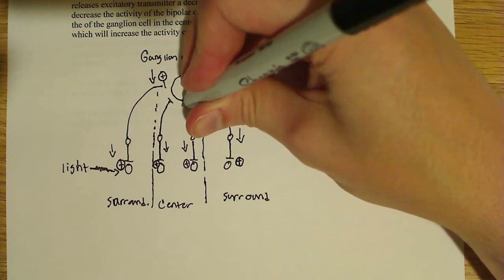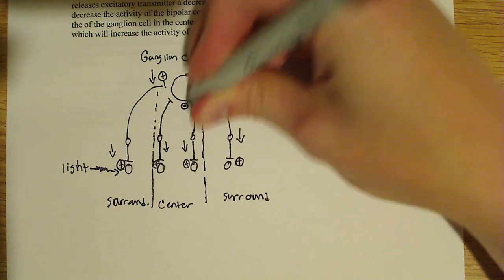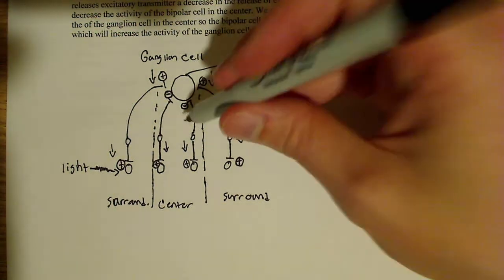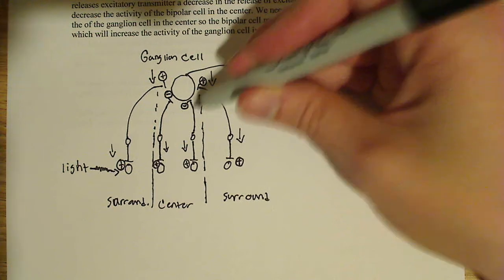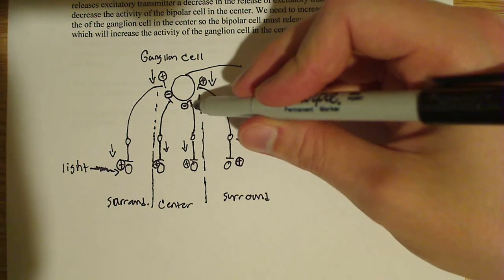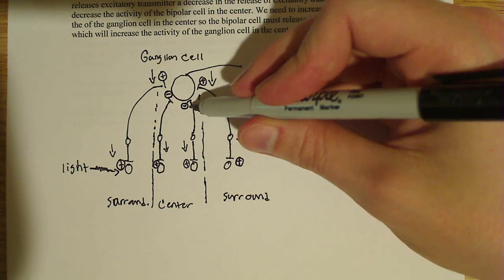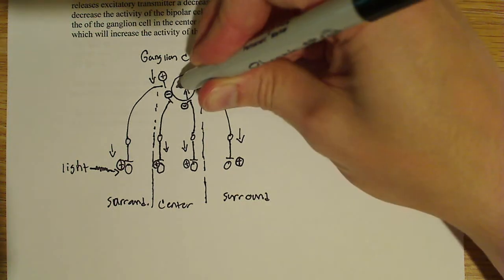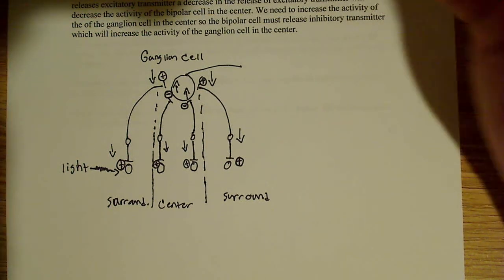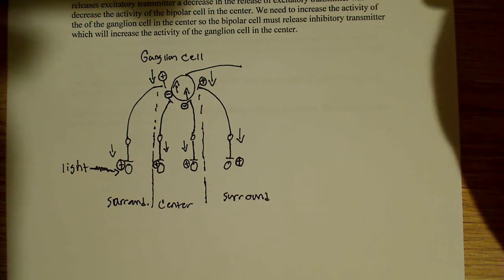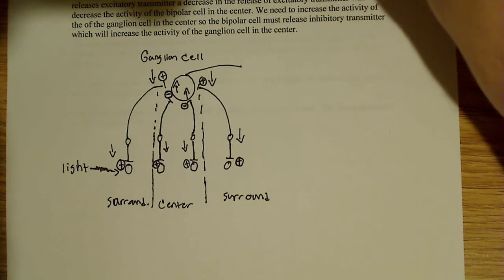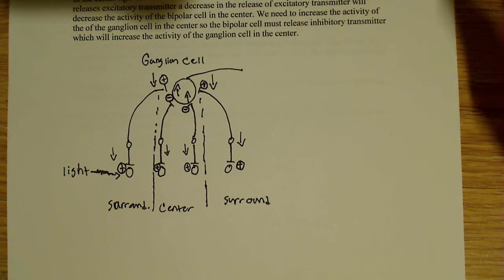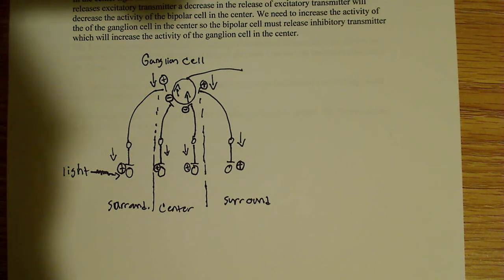It makes intuitive sense. If we use a negative sign to show that we're releasing inhibitory transmitter here — remember the bipolar cell's activity is decreasing — a decrease in inhibitory transmitter results in an increase in the activity of the ganglion cell in the center. So that is the way this process is done, and that's how you would discuss and show the center surround organization for the ganglion cell receptive field.